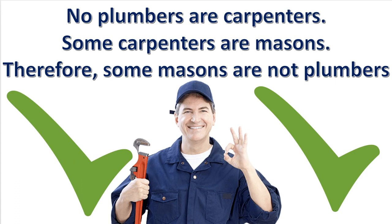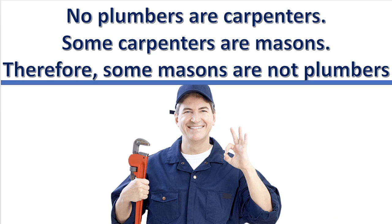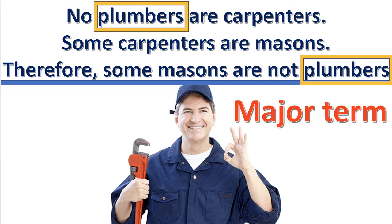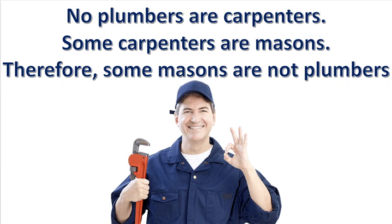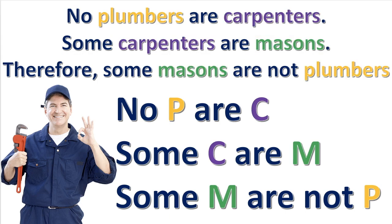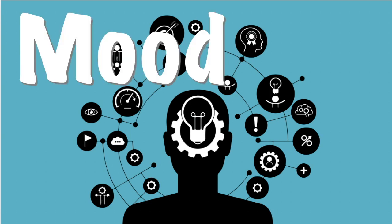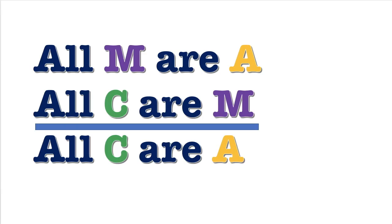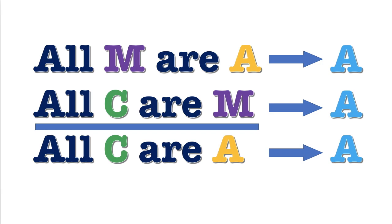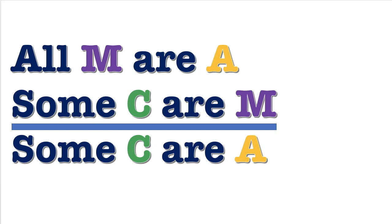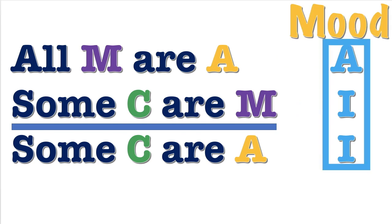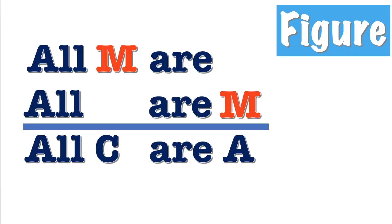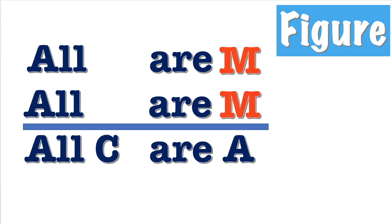Take a look at this syllogism — it is already in standard form. The conclusion is written last; the predicate of the conclusion, which is the major term, is in the premise written first; and the subject of the conclusion, which is the minor term, is in the second premise. Now we will symbolize the argument using letters to represent the terms — this will make it much easier to find the mood and figure. The mood is simply the letter names of the propositions. For example, if the syllogism consists of three A propositions, then the mood is A-A-A. Or if the syllogism has an A proposition and then two I propositions, the mood is A-I-I, and so on.